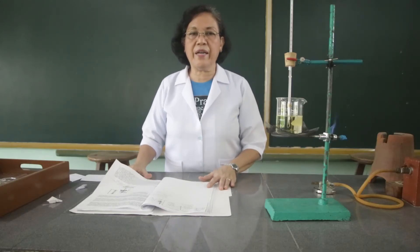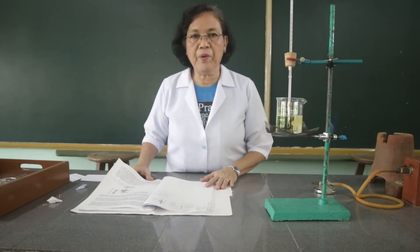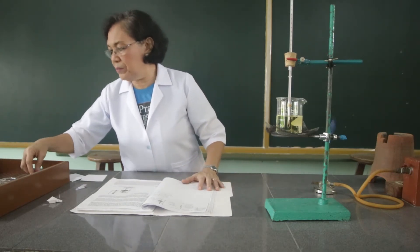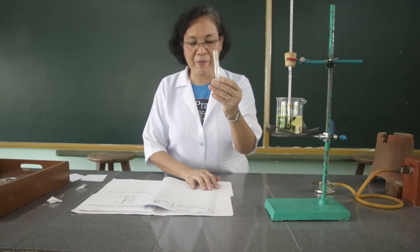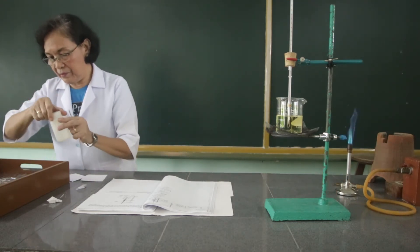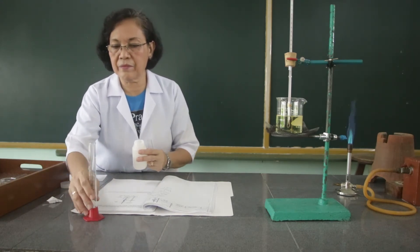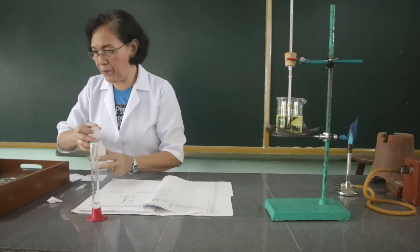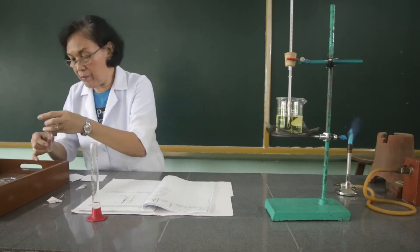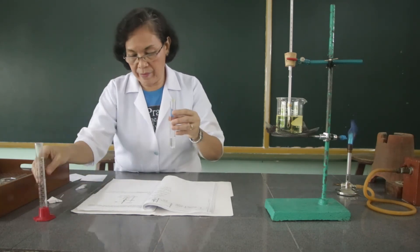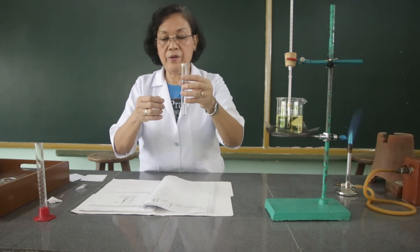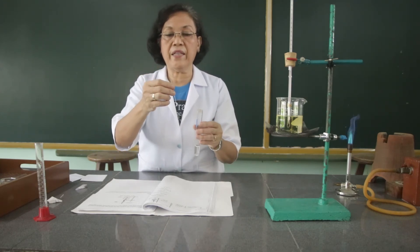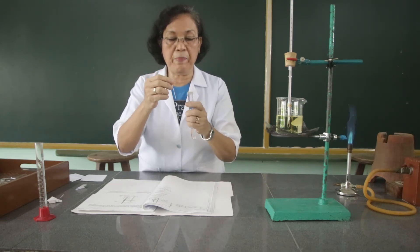The second procedure is the determination of the boiling point. The substance we are going to use is the ethyl alcohol. We are going to place ethyl alcohol into a test tube and fill it with 5 mL of ethyl alcohol. We are then going to place a capillary in an inverted position, meaning the opening will be placed downward.